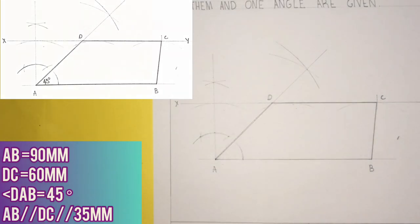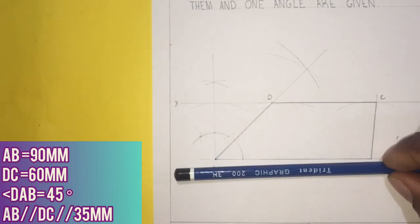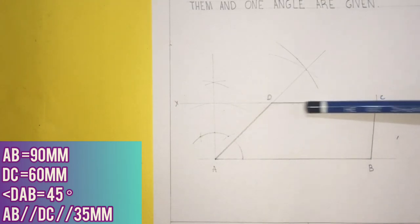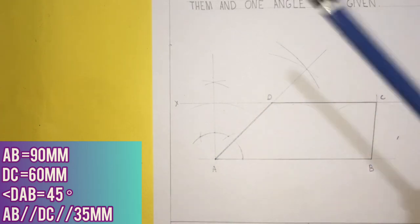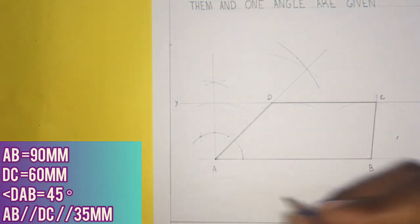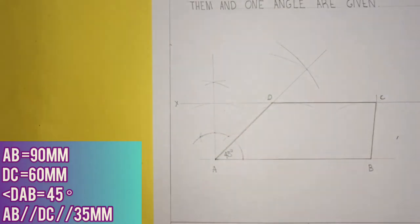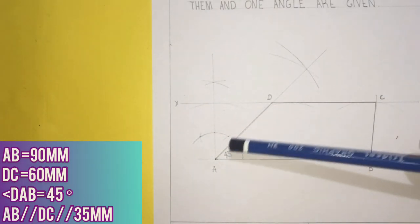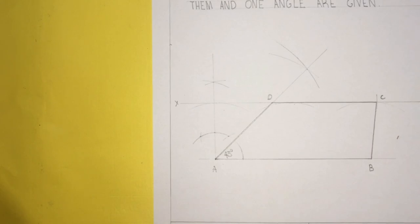Now this trapezium consists of two sides parallel with each other: AB and DC, they are parallel to each other. Angle DAB is a 45 degree angle, and this side and this side, which is AD and BC, they are not parallel to each other. Have a wonderful day.